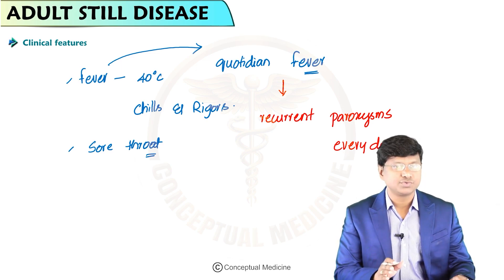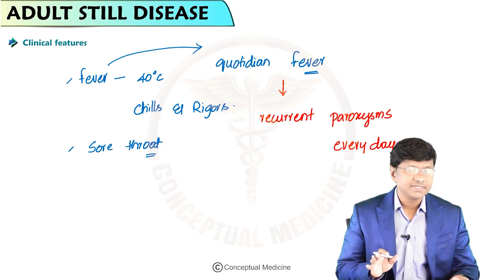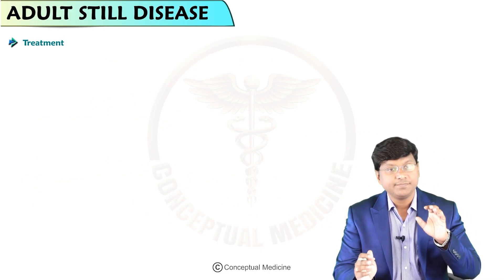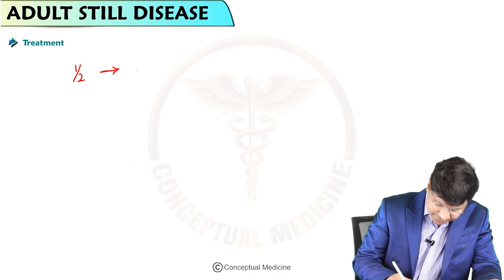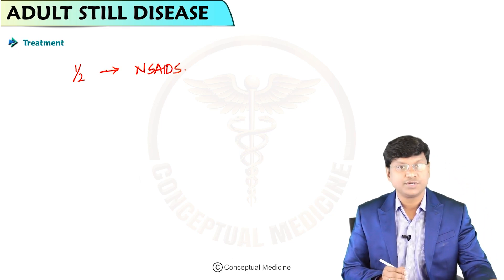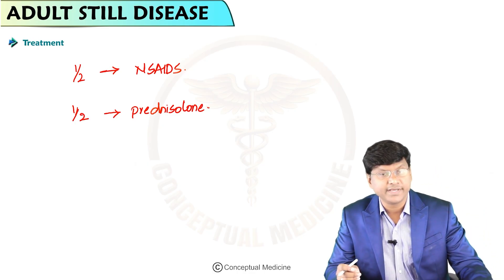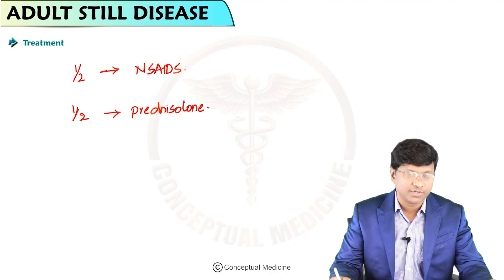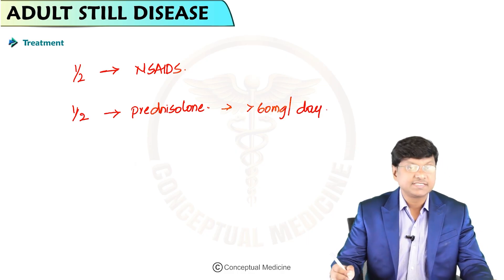There can also be sore throat and the classical evanescent salmon-colored rash. Now for treatment — about half of the patients respond to NSAIDs, and the remaining half require prednisolone. Sometimes the dosage of prednisolone required is greater than 60 milligrams per day orally.